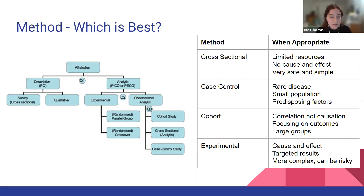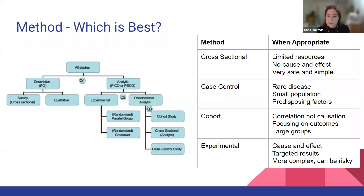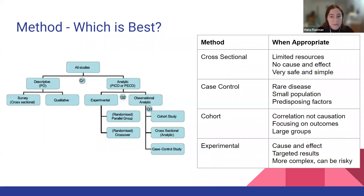Then there's the analytical side. There are experimental studies where you have your experimental group where something is being done to them — traditionally like a drug trial testing a new medication, with a control group. These studies are really good when you want to look at cause and effect and specific results. However, they can be more complex and risky — for instance, if you're using a new medication, you don't really know what it does for everyone.